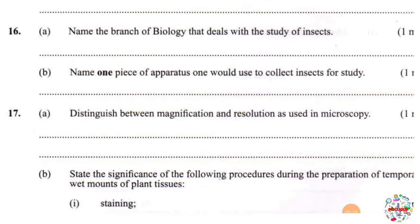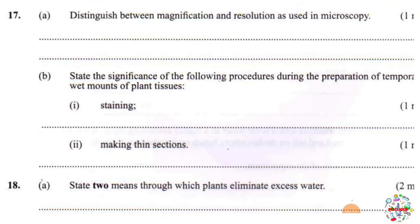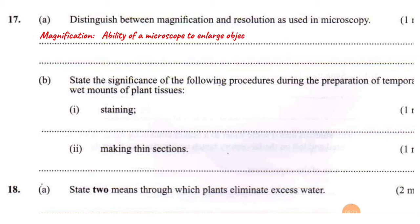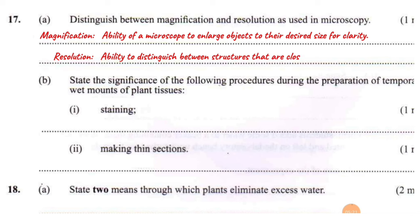Question 17A: distinguish between magnification and resolution as used in microscopy. Magnification is the ability of a microscope to enlarge smaller objects to the desired size for clarity, so that you can see the features of a specimen more clearly. Resolution is the ability to distinguish between two structures that are close to one another as distinct entities.